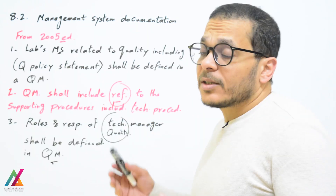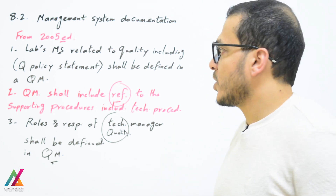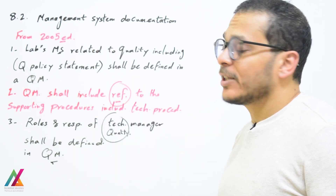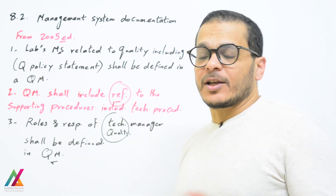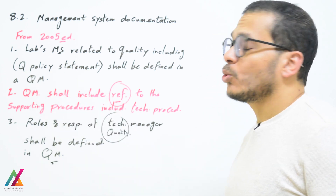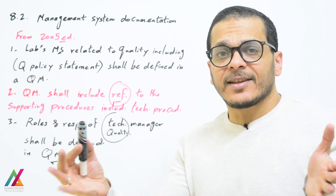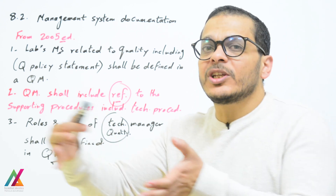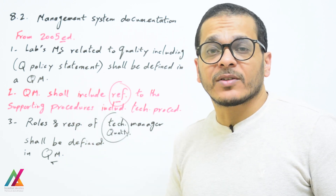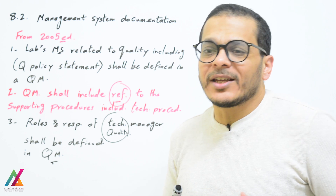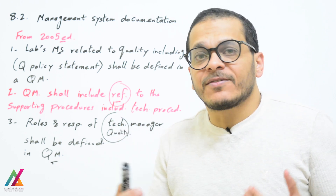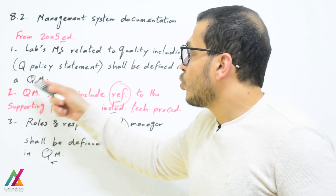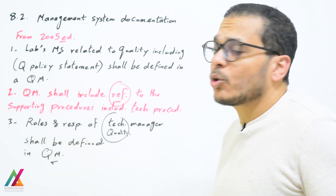Certain requirements from the 2005 edition are no longer applicable in the 2017 edition. Previously, the lab's management system, including the quality policy statement, had to be defined in the quality manual, which also had to reference all supporting procedures. If you already have all the supporting procedures, the quality manual becomes redundant — all necessary information is contained in the supporting procedures themselves.